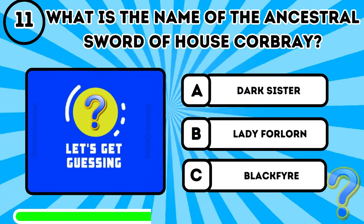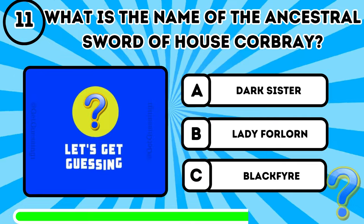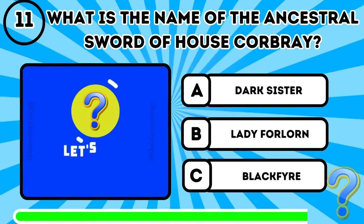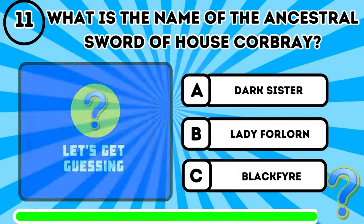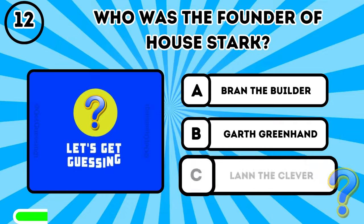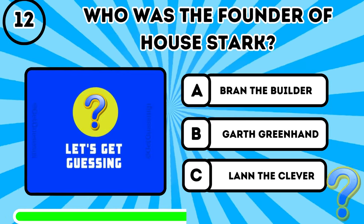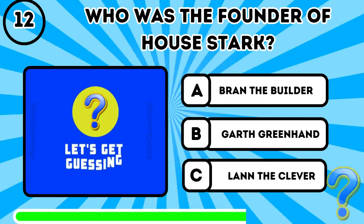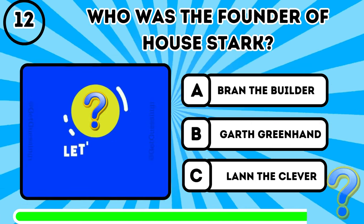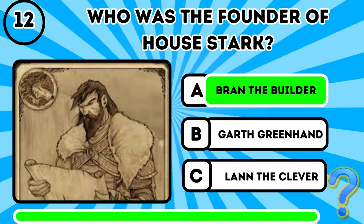Question 11: What is the name of the ancestral sword of House Corbray? B, Lady Forlorn. Question 12: Who was the founder of House Stark? A, Bran the Builder.